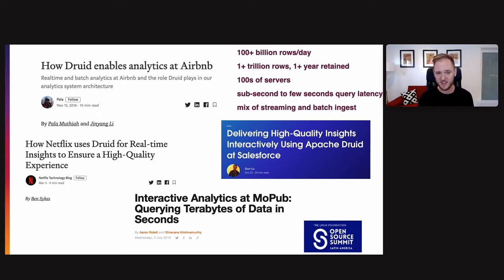Druid's used at a lot of different places. So here's a bunch of articles that were written in the last few years about Druid use. Druid enables analytics at Airbnb. Netflix uses Druid for real-time insights, ensuring high-quality experience. Salesforce uses Druid for insights as well. And Mopub, a Twitter company, uses Druid to query terabytes of data in seconds. Some stats here in the top right of the slide of what's happening in real Druid clusters. So real Druid clusters are doing 100 plus billion rows a day of ingestion, retaining over a trillion rows over a year of data.